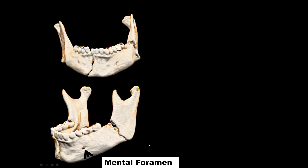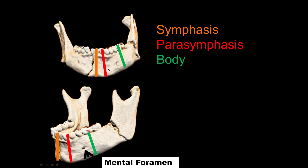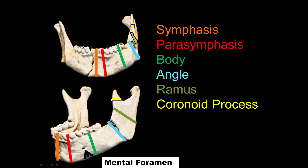Mandible fractures are classified by location. If you find one mandible fracture, be highly suspicious — there's often a second. A fracture through the middle is a symphyseal fracture; just off-center is a parasymphyseal fracture. Other locations include the body, the angle, the ramus, the coronoid process, the subcondylar region, and the condyle.